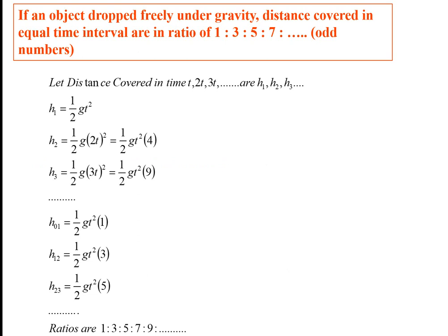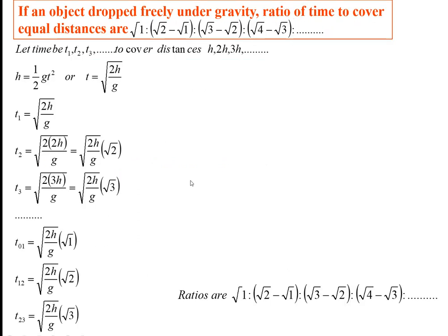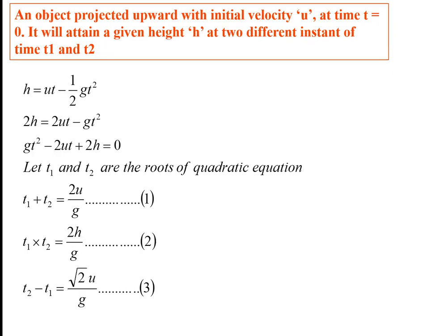Galileo's odd numbers rule: if an object is dropped freely under gravity, distances covered in equal time intervals are in the ratio 1 : 3 : 5 : 7. If an object is dropped under gravity, the ratio of times to cover equal distances is √1 : (√2 − √1) : (√3 − √2), and so on.